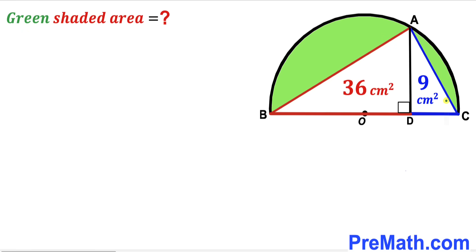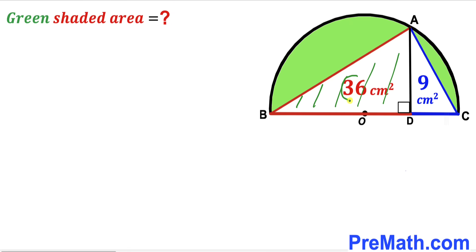Welcome to pre-math. In this video we have got triangle ABC fully inscribed in a semicircle with center O, along with perpendicular AD, such that the area of right triangle ADB is 36 centimeters square, whereas the area of right triangle ADC is 9 centimeters square. Our task is to calculate the area of the green shaded region — this area and this area combined.